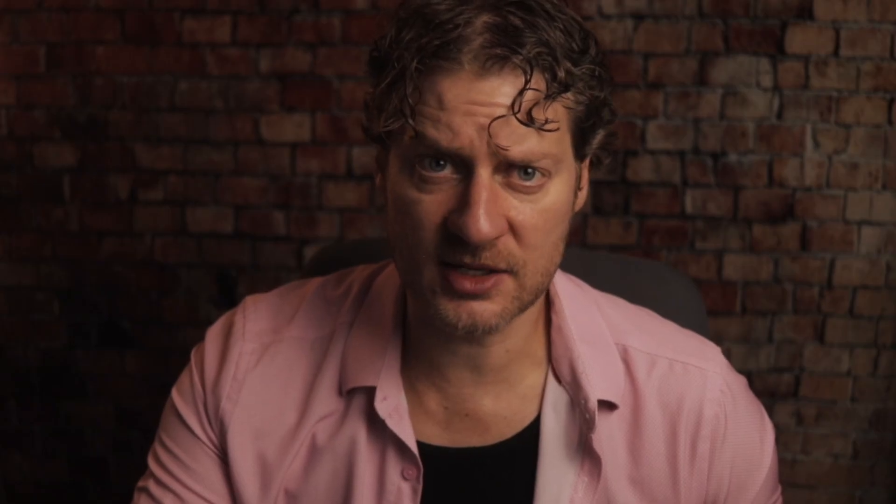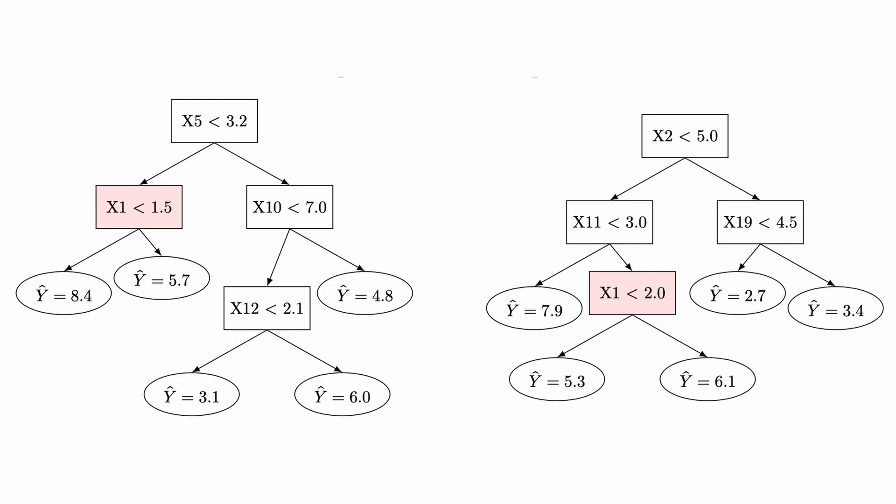We're only shuffling x1 because we want to know x1's contribution. The next step is to find all the trees in our random forest model that use x1 as a predictor. For example, x1 might appear at the second node of one tree and the third node of another. For each of those trees, instead of using the original x scores, we use the shuffled x scores.